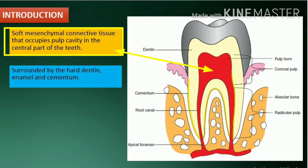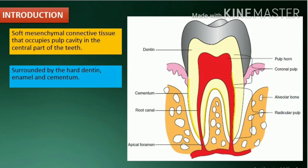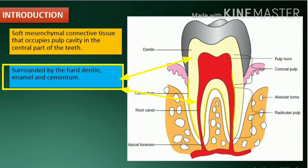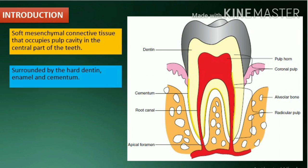Introduction. The pulp is a soft mesenchymal connective tissue that occupies the pulp cavity in the central part of the teeth, surrounded by the hard dentin, enamel, and cementum.